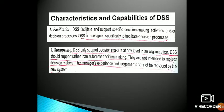Characteristics and capabilities of DSS: First is Facilitation — DSS facilitates and supports specific decision activities and decision processes. DSS are designed specifically to facilitate the decision process. The second characteristic is Supporting — DSS only supports decision makers at any level of the organization. DSS should support rather than automate decisions, and they are not intended to replace decision makers. The managers' experience and judgment cannot be replaced by this system.